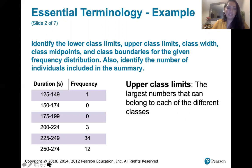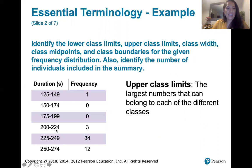Our upper class limits are the largest numbers that can belong to each of the different classes — just the numbers on the far right. So our upper class limits are 149, 174, 199, 224, 249, and 274.